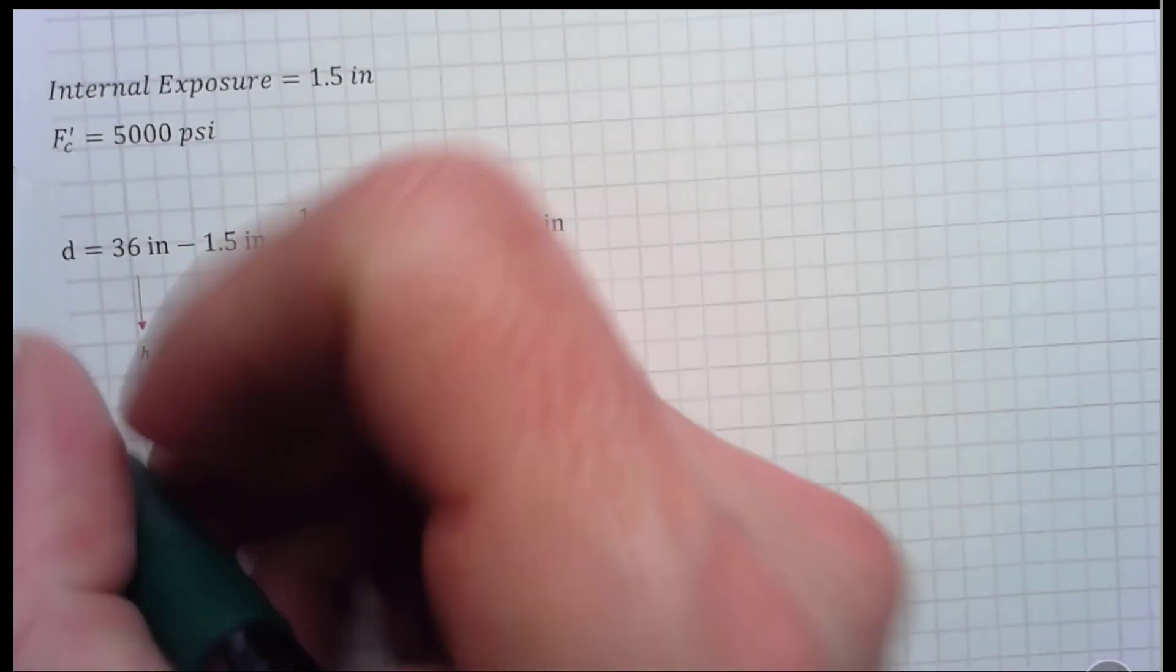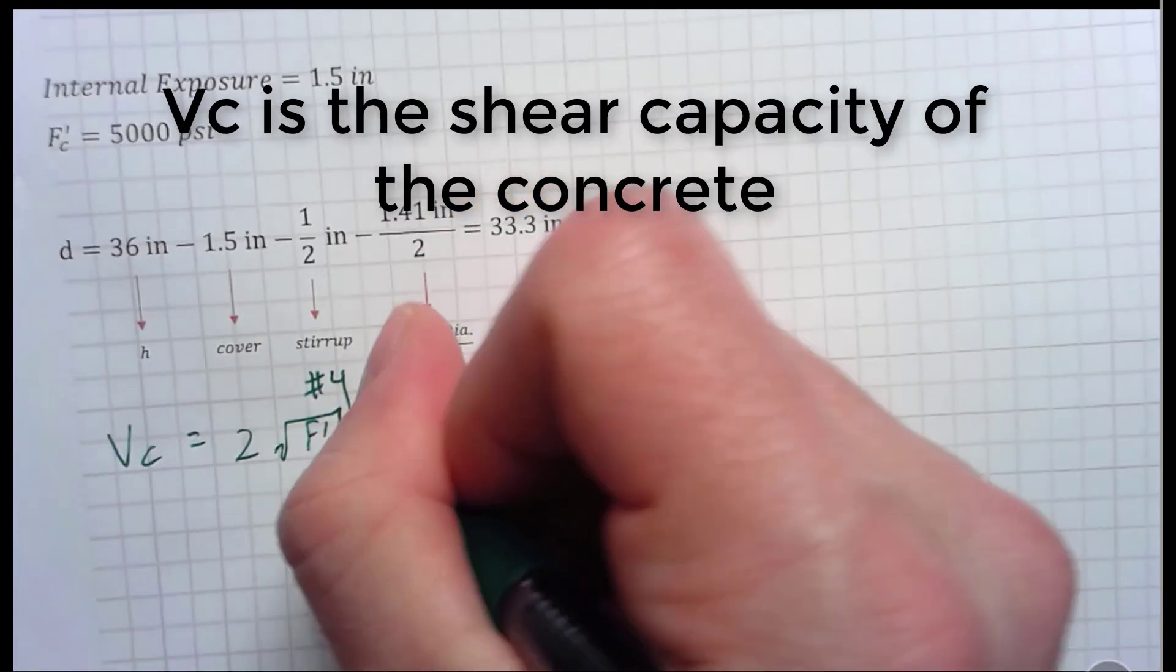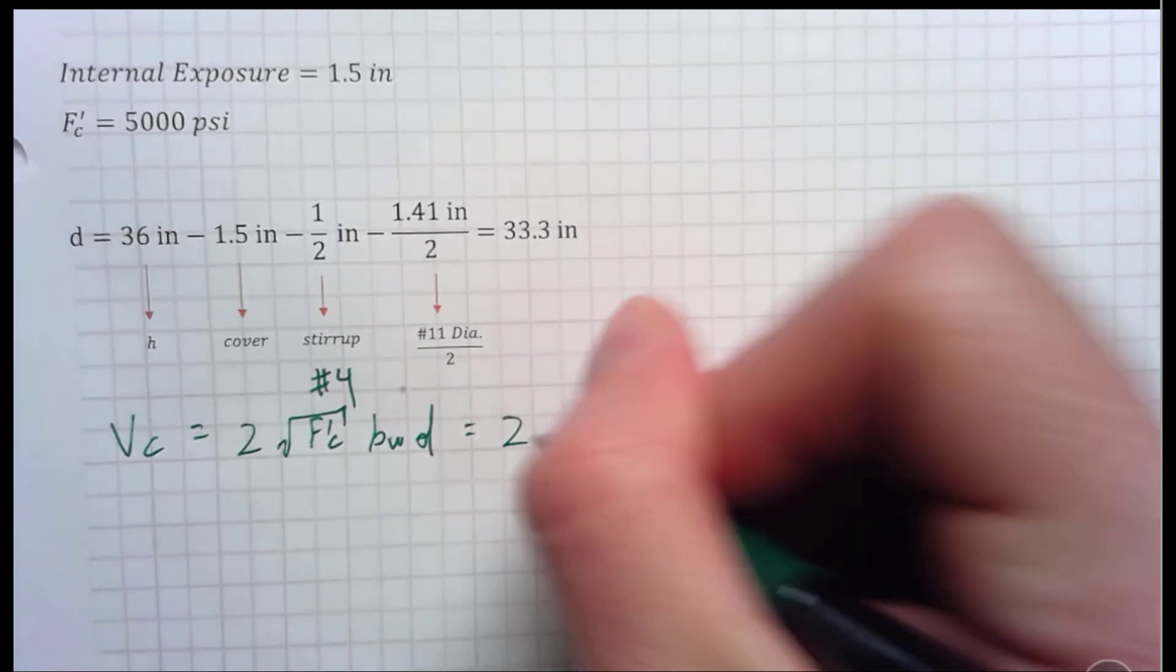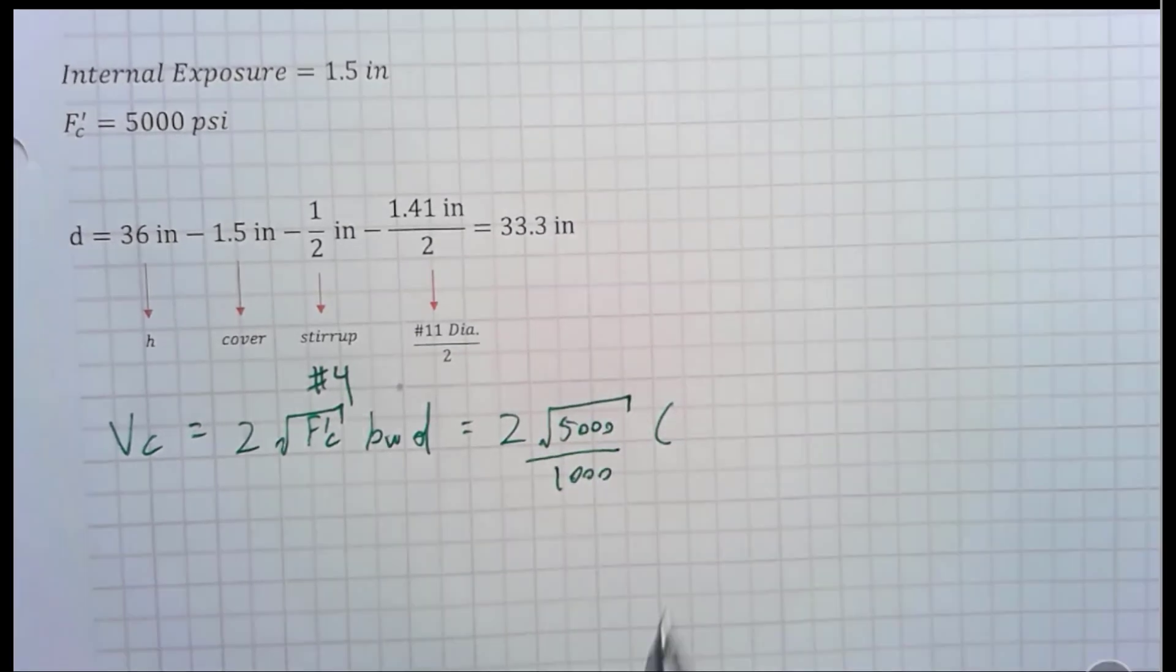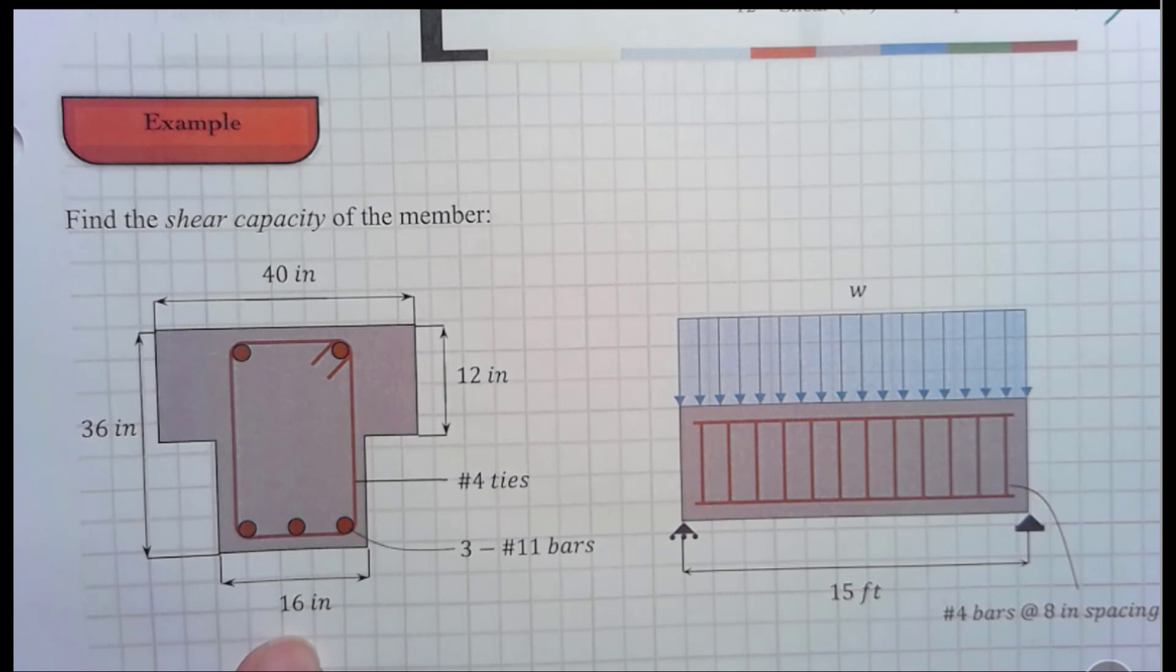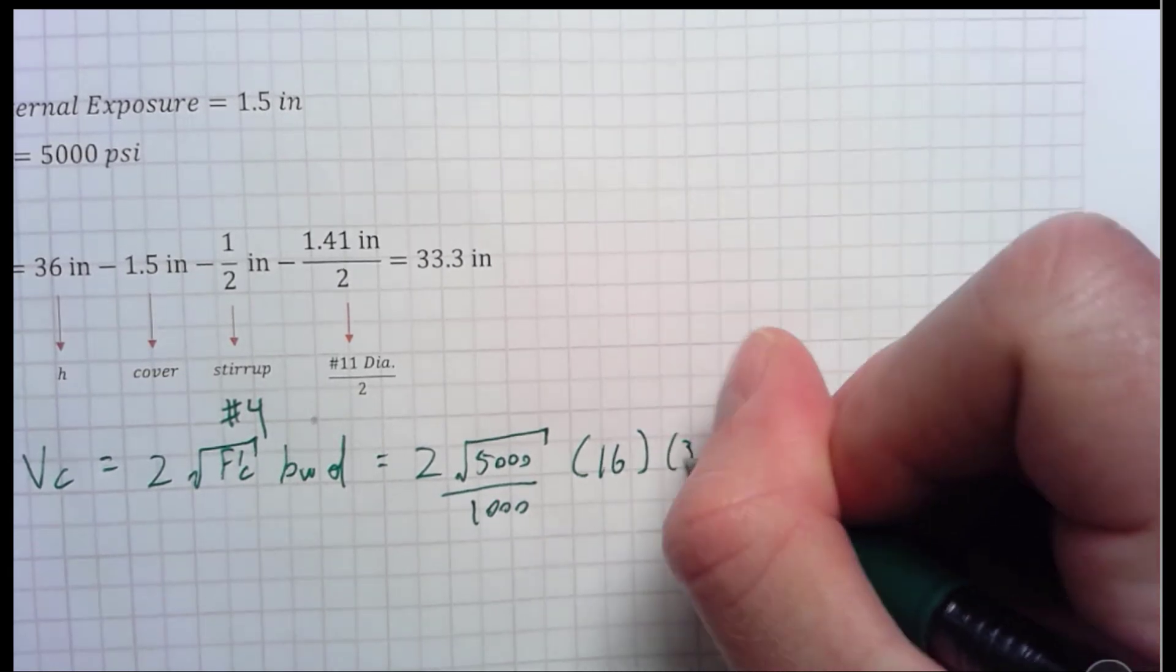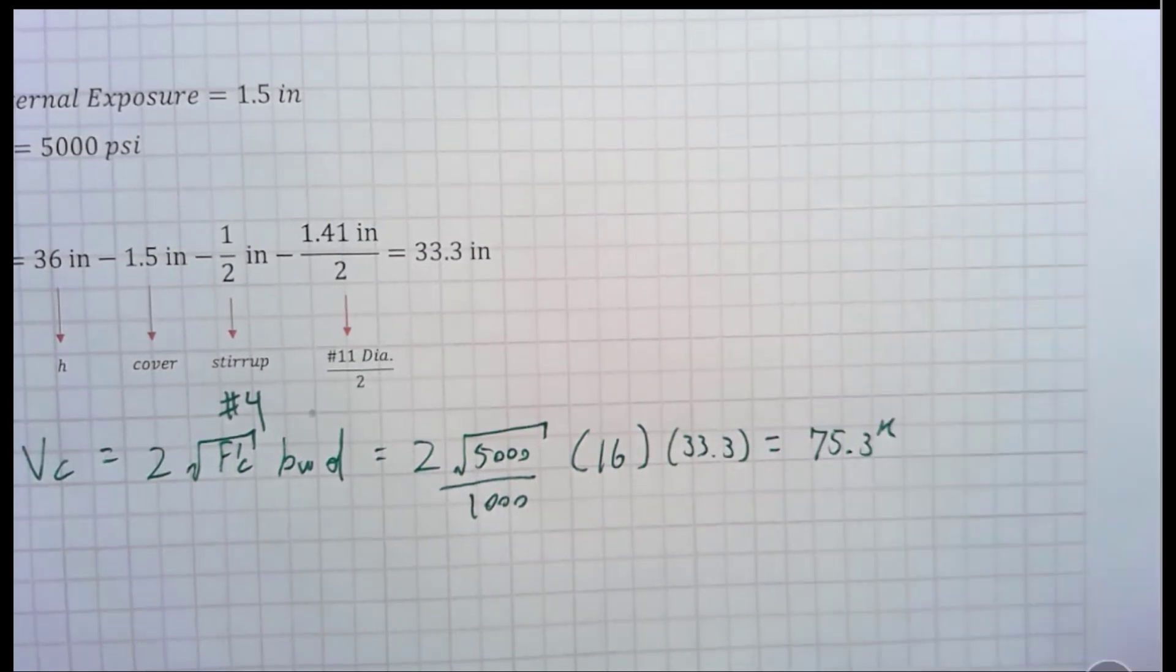So, the next thing to do is you calculate your capacity of your concrete, V sub C, which is equal to 2 square root of f prime c, bw*d. Now, what is bw? Bw is the width of the web. That's important. So, in this problem, it's going to be 2 times the square root of 5,000, all divided by 1,000, multiplied by bw. Now, what's bw? Well, let's go up here and look. This is the b of the flange, 40. This is the b of the web, 16, and bw is b of the web. That's what we end up using. So, this number now is 16 inches, and then that is multiplied by 33.3 inches for the d, and the whole thing is then equal to 75.3 kips.